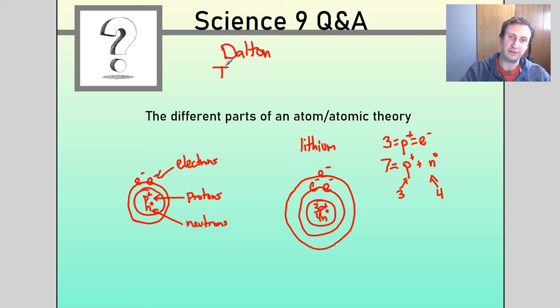After that, we had Thompson. Thompson and his plum pudding model. So this is with the cathode ray tube, showing that electrons were a thing, these negative particles. Then he said, okay well, we must have these negative electrons within a positive particle soup. So that's plums, the negative electrons within the positive particle pudding. So that was his model, was the plum pudding model.